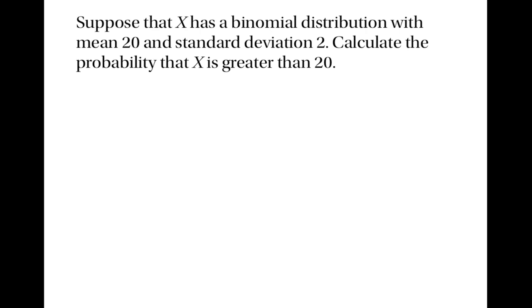Suppose we have a random variable that has the binomial distribution with mean 20 and standard deviation 2, and suppose we want to know the probability that x is greater than 20. We're told that x has the binomial distribution, but we don't know how many trials there are or what the probability of success is. So let's say that the number of trials is n and the probability of success is p — we need to work these out in order to calculate any probabilities.